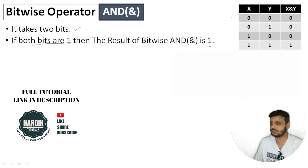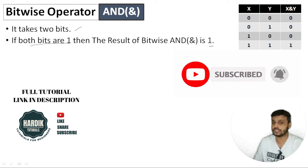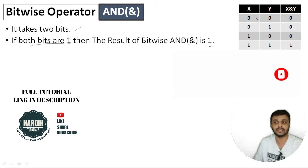If we have a trotter, let's take a table. For example, two openings. If the result is 0 and 0, then we will get 0.